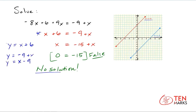Or rewrite this to y equals x minus 9, and that's how you get the two equations that you're going to graph. You solved it numerically to find out that there was no solution because you got a false equality, and then graphically you confirm this by seeing that the lines are parallel.